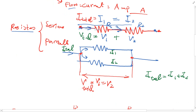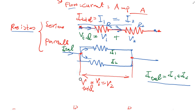In parallel, you have a choice. For instance, if you want to go between two routes — route one and route two — the electricity can pick either the top or the bottom. In this case, I splits, so I total equals I1 plus I2. But voltage will be the same on both sides: V equals V1 equals V2. This makes sense because the pressure difference between those two points will be the same on both sides.